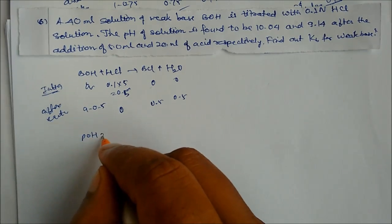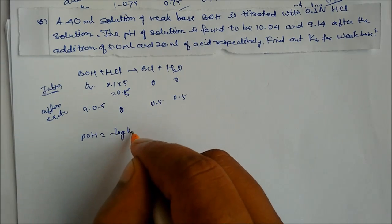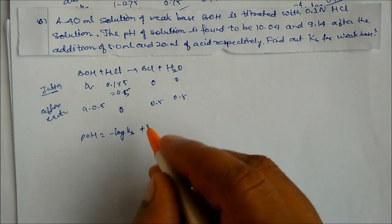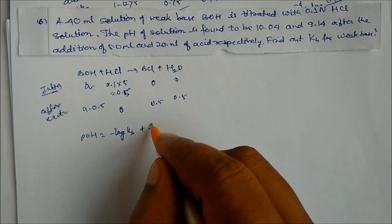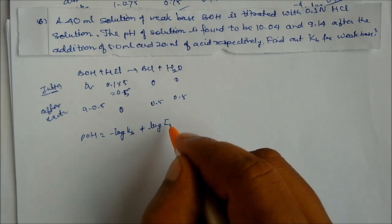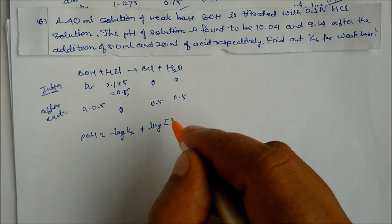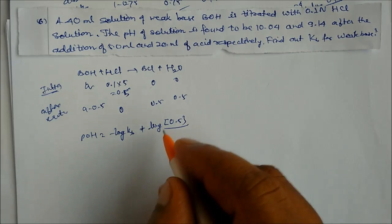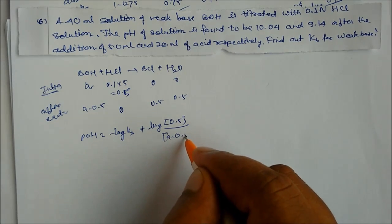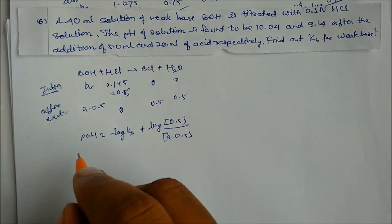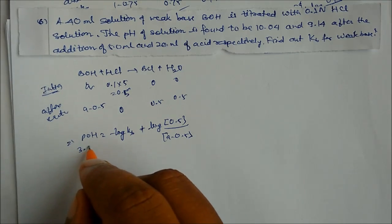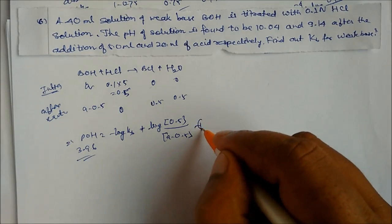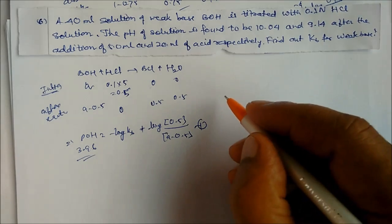pOH = 14 − 10.04 = 3.96. Writing the Henderson equation for basic buffer: 3.96 = −log(Kb) + log(0.5/(a−0.5)). This is equation 1. For case 2, after adding 20 mL acid: HCl millimoles = 0.1×20 = 2.